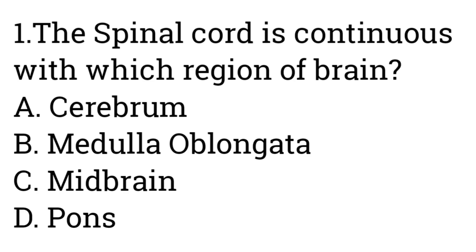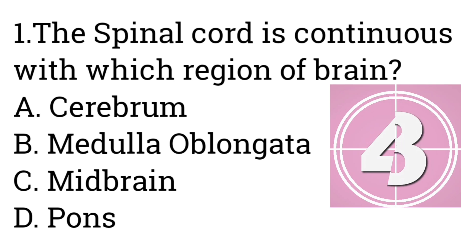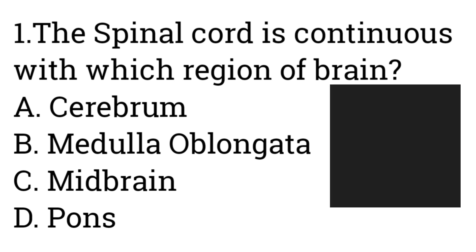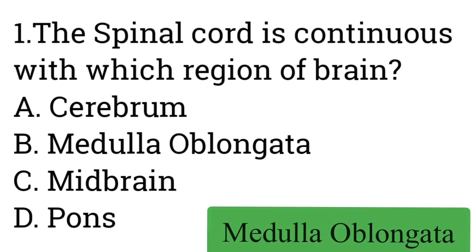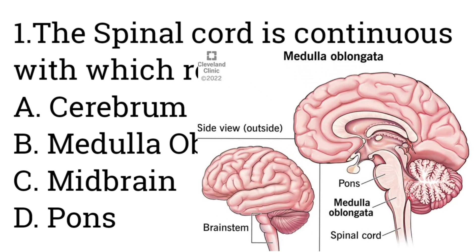Question number one: The spinal cord is continuous with which region of the brain? Option A: Cerebrum, B: Medulla oblongata, C: Midbrain, D: Pons. Answer is Medulla oblongata. The spinal cord is continuous with the medulla oblongata at the foramen magnum. The medulla oblongata is the last part of the brain which further elongates to form the spinal cord.